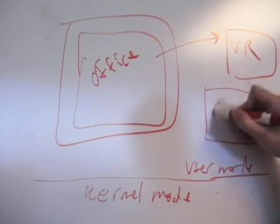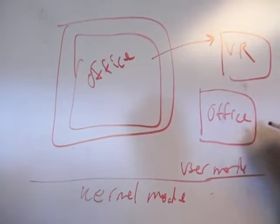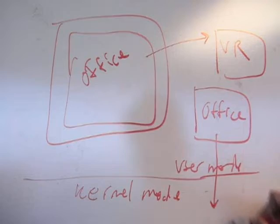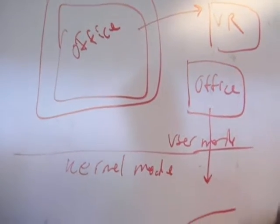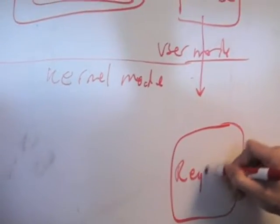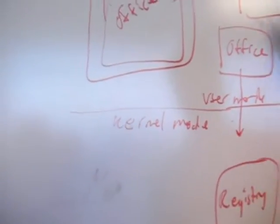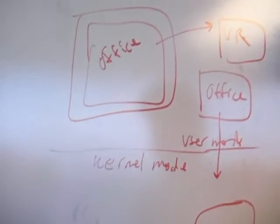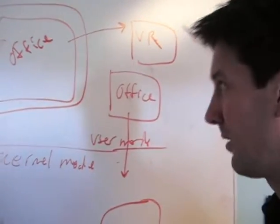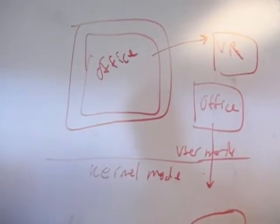Whereas another instance of Office might be running here, not inside of Softgrid, and when it makes changes to the registry, it goes to the real registry.